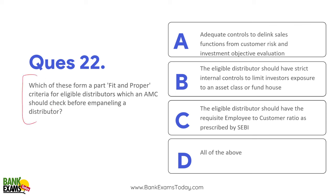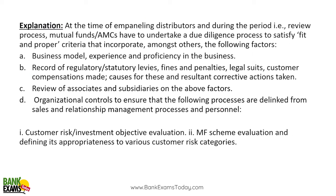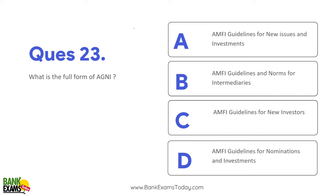Which are part of fit and proper criteria for eligible distributors that an AMC should check before empaneling? Adequate control to separate sale function from customer risk and investment objective evaluation. Risk profiling is the job of an investment advisor, not a distributor — the distributor's job is sales. The full form of AGNI is 'Guidelines and Norms for Intermediaries.'